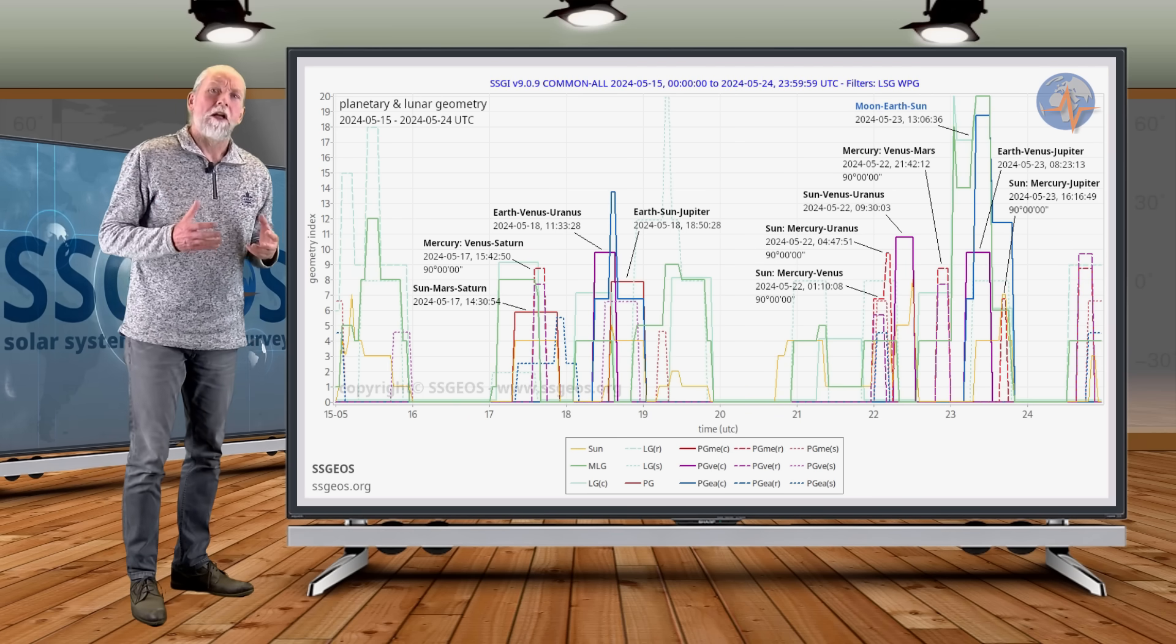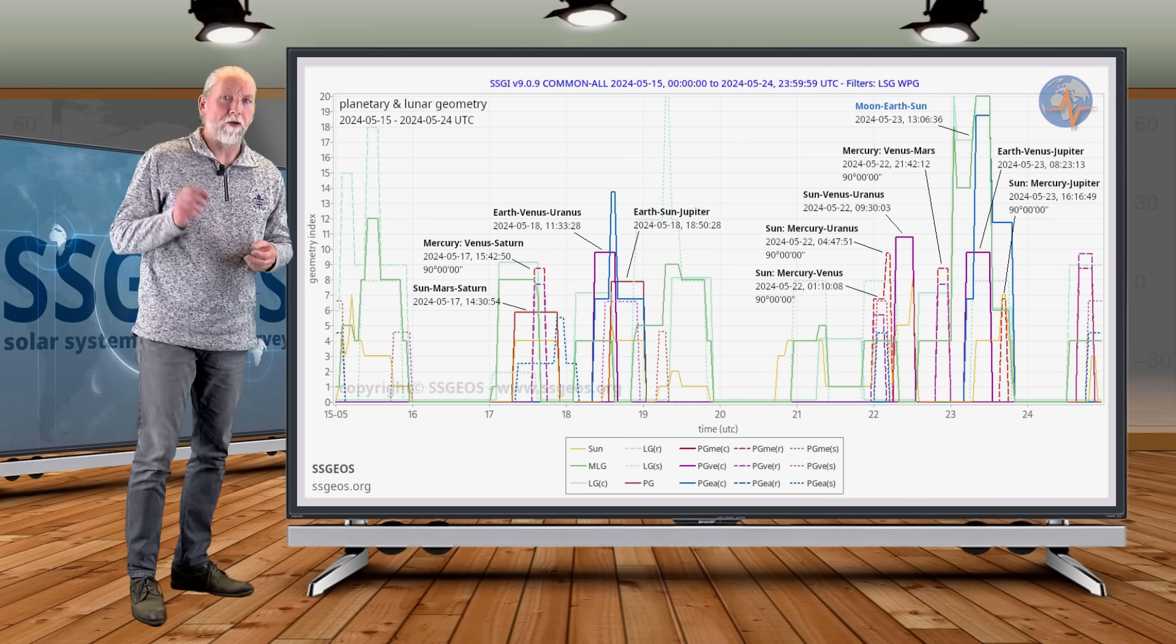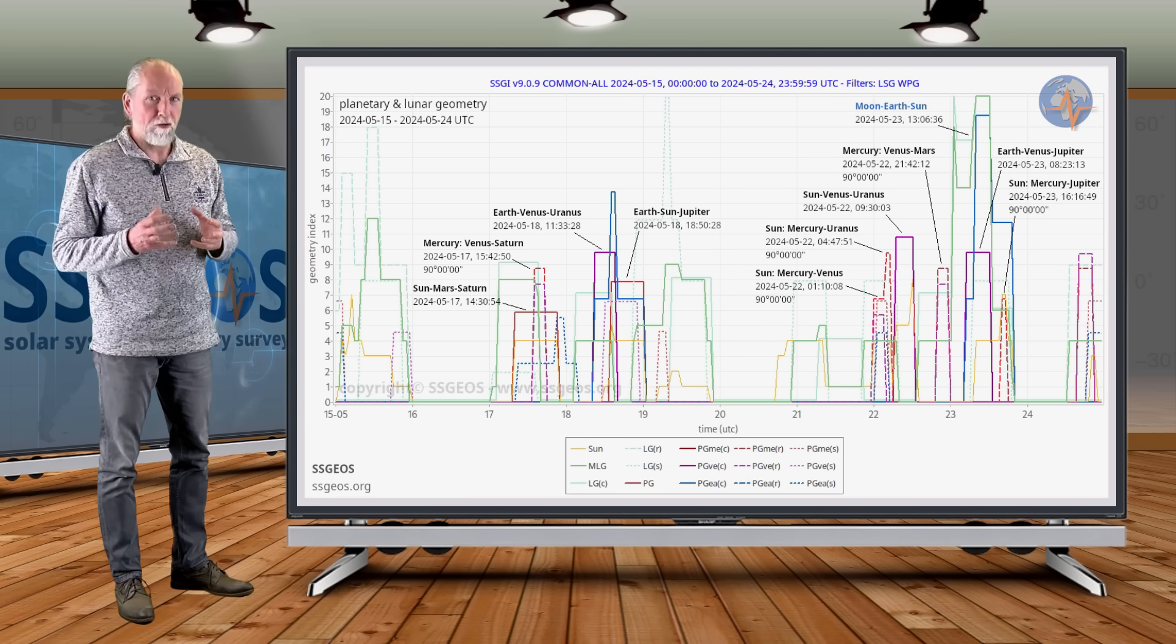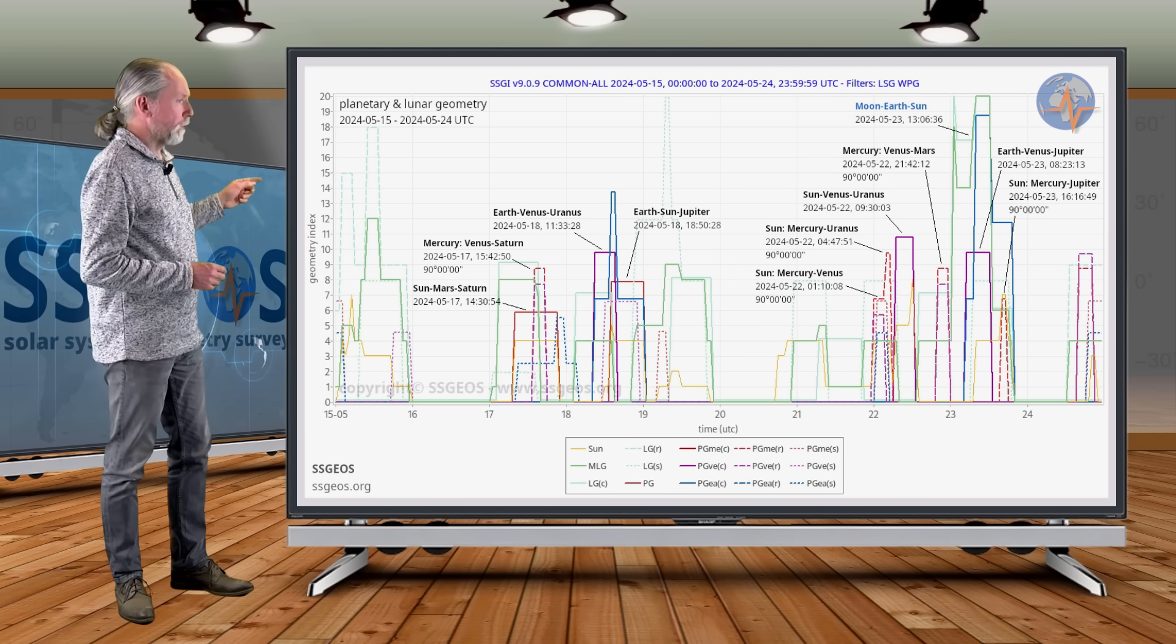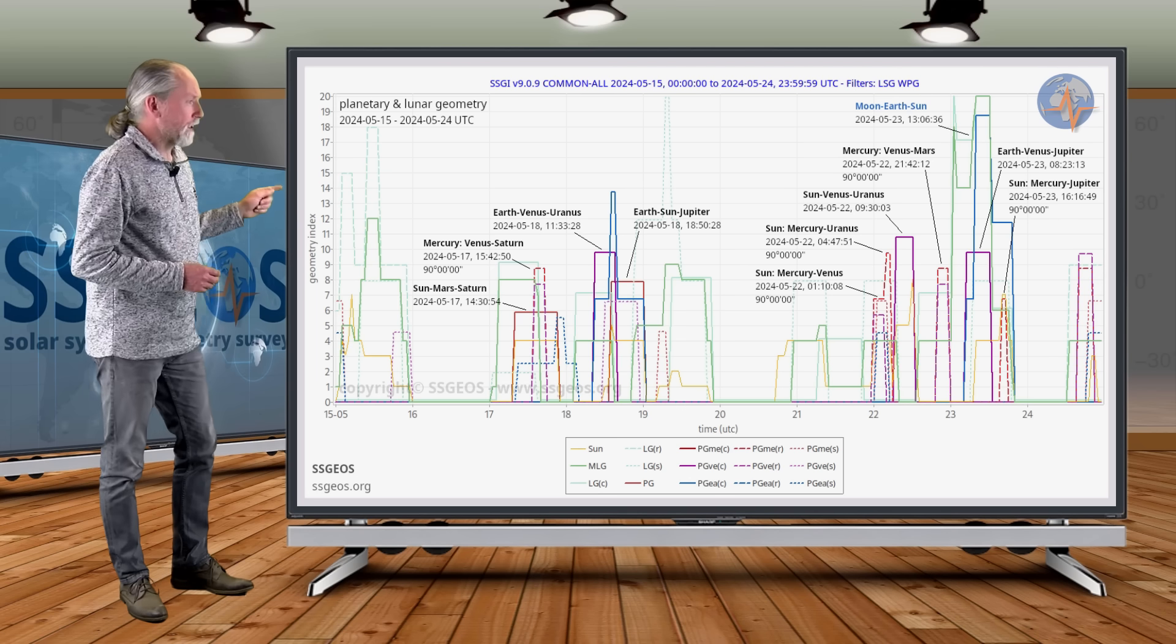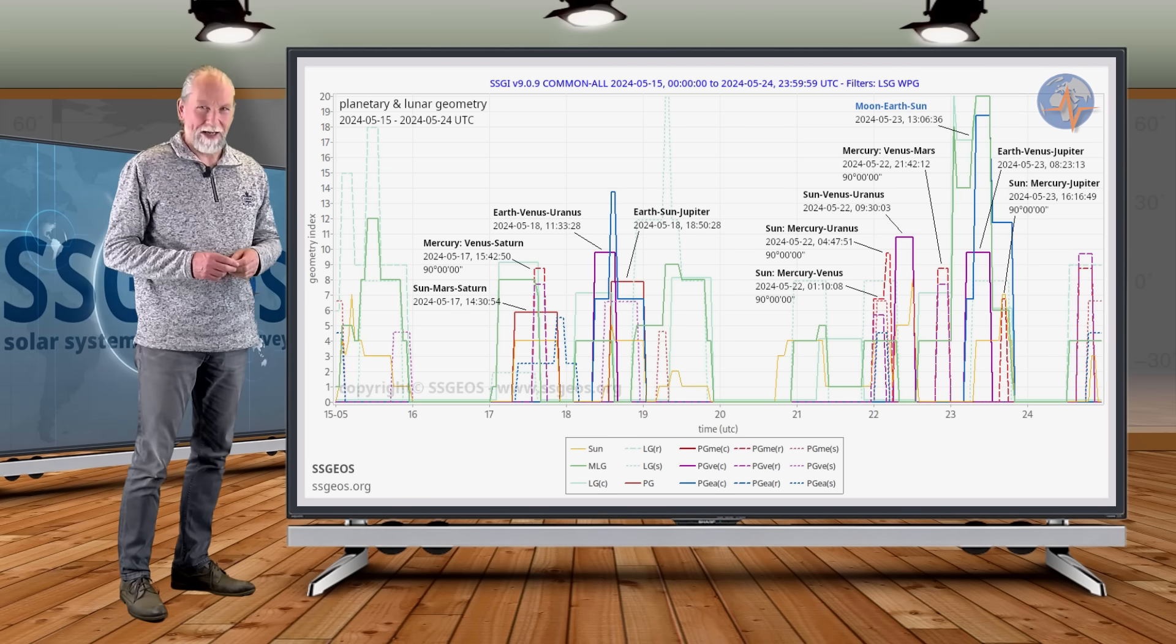Now let's have a look at what we're going to have in the next time frame. It's going to be critical. We're going to have two critical convergences of planetary geometry. The first will be on 17-18 May, and that will involve planetary conjunctions as well as a right angle.